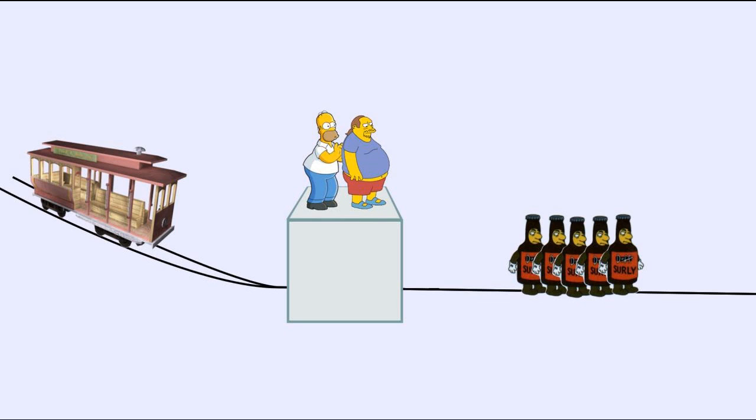On the surface the scenarios seem to be the same, one life in exchange for five. But people tend to say yes to throwing the switch and no to pushing the fat man, so why is this?